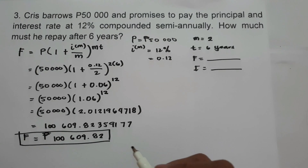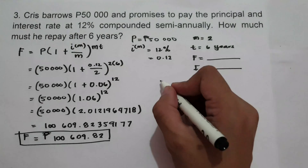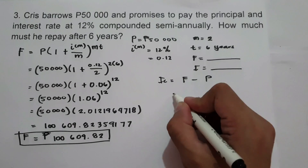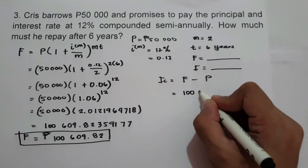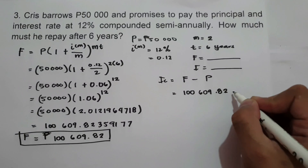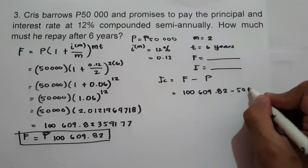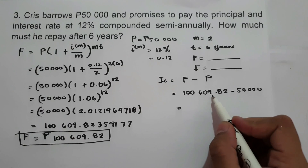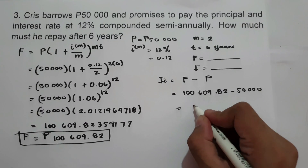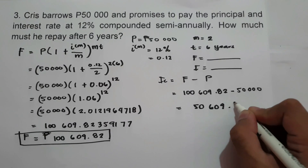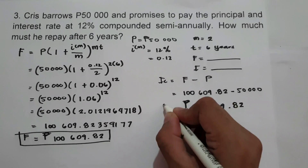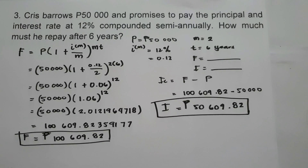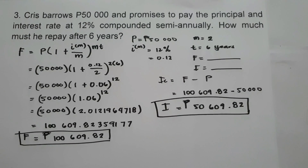To find the interest, we compute future value minus principal: 100,609.82 minus 50,000 equals 50,609.82. This will be the interest. I hope you learned from this lesson. Thank you so much for watching, and God bless us all.